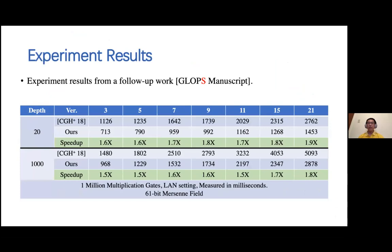A follow-up work has implemented our results and compared with the previously best-known implementation—the work by CGH+ in Crypto 2018. The experiments use arithmetic circuits with 1 million multiplication gates in an LAN setting, with a 61-bit Mersenne field. Two different circuit types were tested: one with depth 20 and one with depth 1000, with different numbers of parties. When circuit depth is 20, our protocol is about 1.7 times faster than CGH+18. When circuit depth is 1000, our protocol is about 1.6 times faster. The experiment results show that our construction is also efficient in practice.